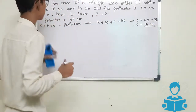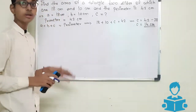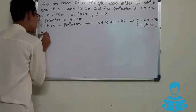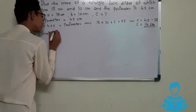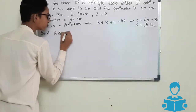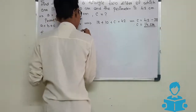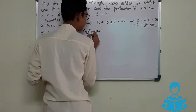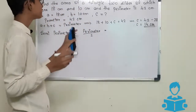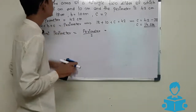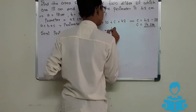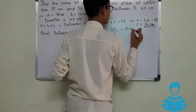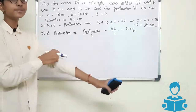Now we have got the value of c as 14 centimeters. Next we find the semi-perimeter. Since the perimeter is given, we simply divide it by 2: semi-perimeter equals 42 divided by 2, which gives 21 centimeters. So the semi-perimeter is 21 centimeters.